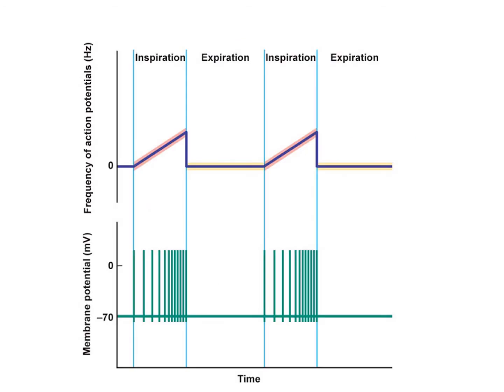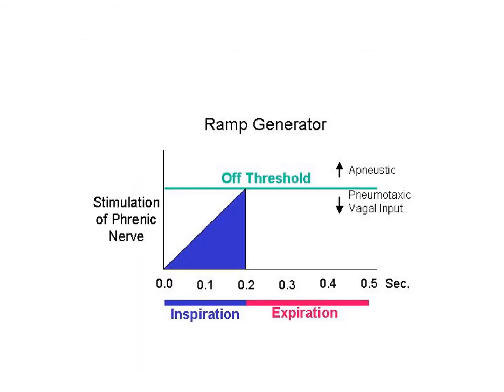The ramp rhythm of the dorsal respiratory group means its discharge is not in the form of bursts of action potentials, but begins weak and increases gradually for two seconds, then stops suddenly for three seconds, and so on. This causes gradual inspiration and prevents gasping breathing, helping to control the depth and rate of breathing. The depth of breathing is controlled by changing the rate of increase of the signal — for example, during exercise there will be a rapid increase. The rate of breathing is controlled by changing the point of stoppage: if it stops early, less than two seconds, this will increase the rate of breathing.